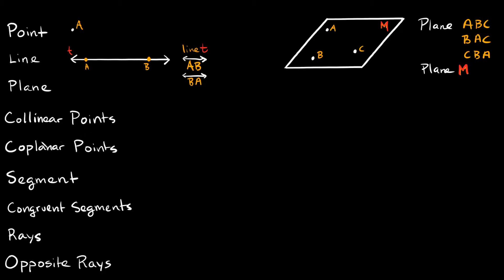Now let's talk about collinear points and coplanar points. If you think about the prefix 'co' — think about words like co-host, co-worker, co-op, or cooperate — it means together, working together. So collinear points are basically points that are together on a line; they're points that are on the same line. And coplanar points would be points that are on the same plane.